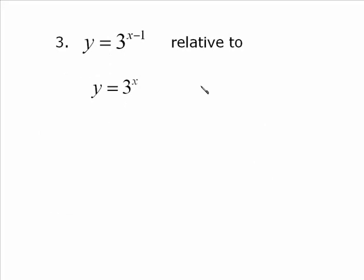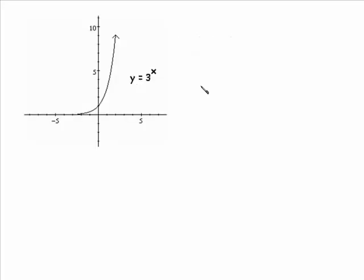Then y is equal to 3 to the (x minus 1) relative to 3 to the x. This is an exponential function. The base is 3. And the base will always be different. And that base does not give you any, it's not a transformation. It's just the base of the exponential graph. And the original, untransformed, is 3 to the x, looking like that.